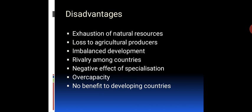Now, what are the disadvantages of international trade? First, exhaustion of natural resources — developing countries export their materials to developed countries at cheaper rates, which increases exports and causes exploitation of natural resources to a greater extent. Another disadvantage is loss of agricultural producers — agricultural producers generally face losses in international trade as demand for agricultural products is less elastic.